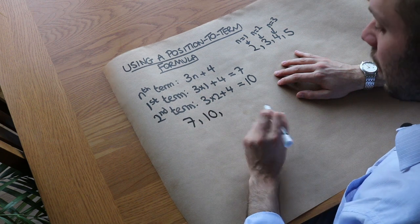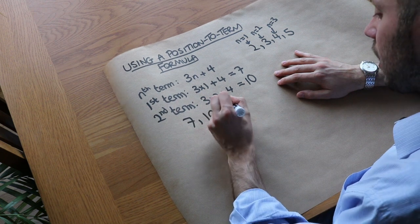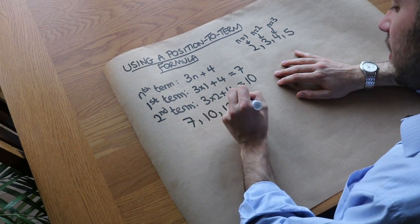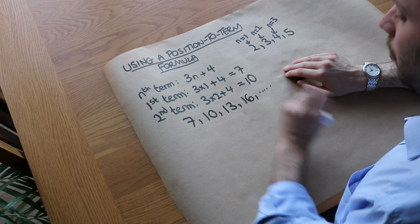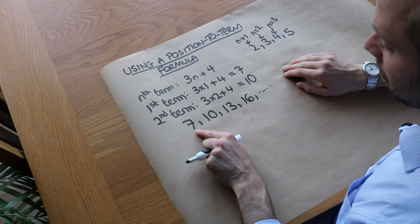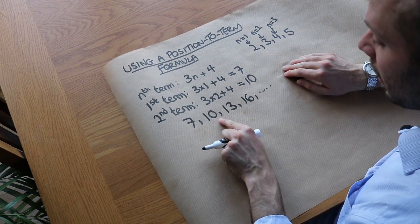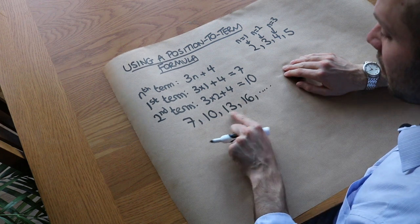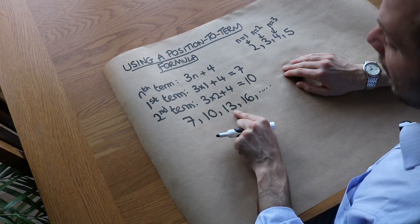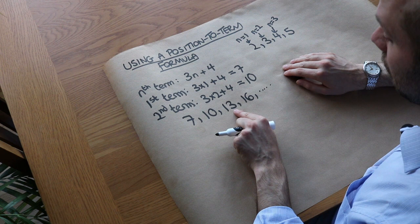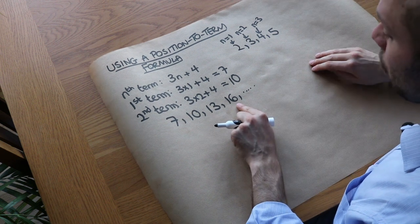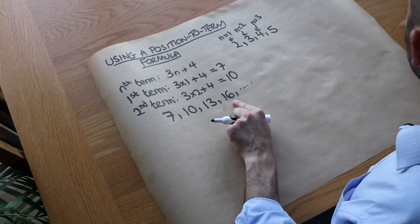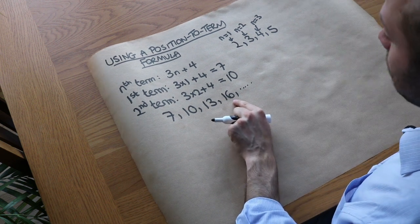Continuing this sequence: the third term would be 13, then 16, and so on — we could go on forever. So n is 1 for the first position, n is 2 for the second, n is 3 for the third, n is 4 for the fourth position, etc.